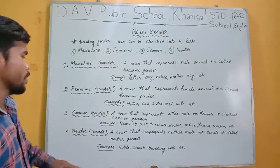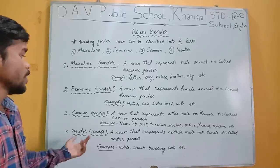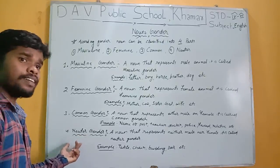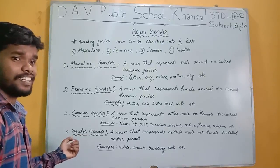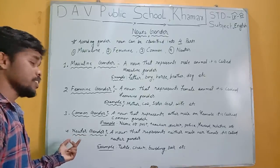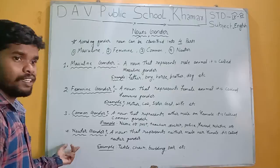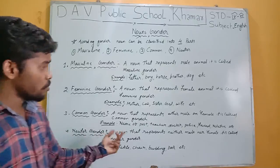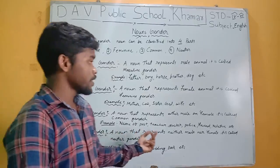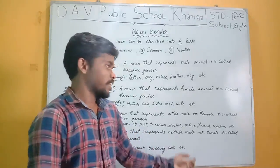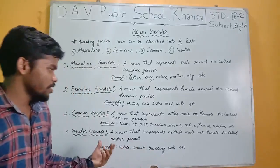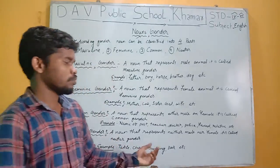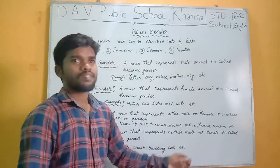The next and last one is neutral gender. Neutral gender refers to non-living things. The noun which is non-living — we can say neutral gender. It is a noun that represents neither male nor female. For example: table, chair, building, books.